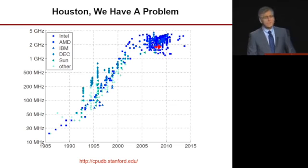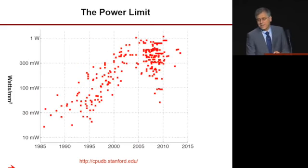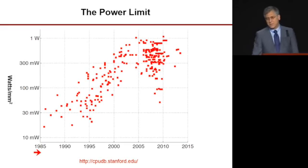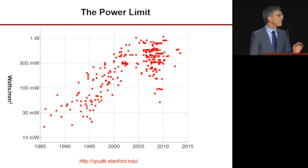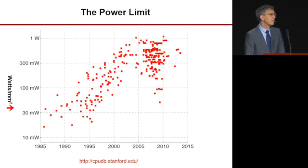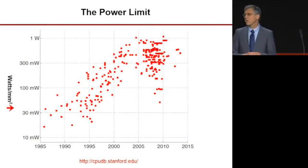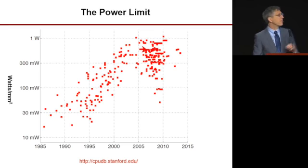Scaling performance without scaling clock frequency is much harder — that's why the ducks are paddling so hard. The reason we ran into this problem is that during the period when we were scaling clock frequency so fast, we were also scaling up power density. This isn't total power — it's watts per square millimeter — and processor dies are on the order of 100 to 200 square millimeters, so getting up to one watt per square millimeter means a die that's a couple hundred watts.